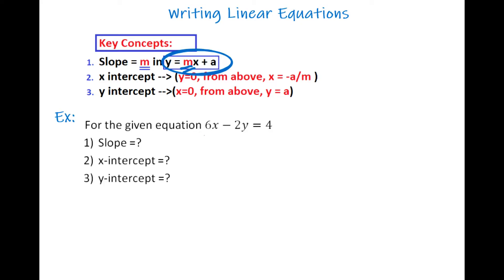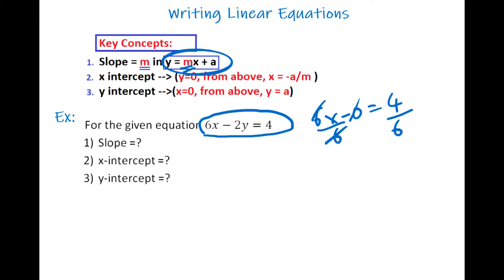For example, in this equation, x-intercept means when y is equal to 0. So when y is equal to 0, just put 0 instead of y. We get 6x minus 0 equals 4, so 6x equals 4. Divide both sides by 6, so x is 4 divided by 6. If you simplify this expression, we get 2 over 3. So x-intercept is 2 over 3.